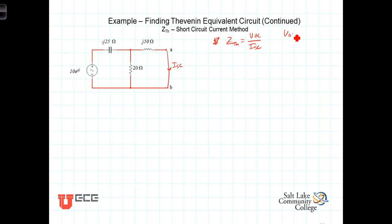In our previous video, we found that the open circuit voltage was equal to 6.25 angle 51.34. So now we simply need to calculate the short circuit current and then find the Thevenin impedance by taking the ratio of those two.